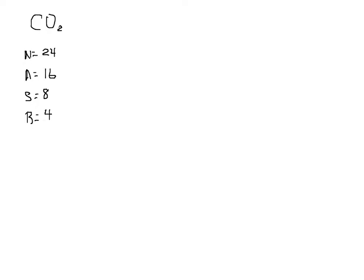Needed minus available leaves us with 8, and divided by 2 to get the number of bonds gives us 4. Carbon is in the middle; we need 4 bonds, so that means there are double bonds to each of the oxygens. Put in our lone pairs. Notice there are two bonding groups — two bonded atoms, no lone pairs — so that makes it linear for molecular geometry and linear for electronic geometry. Since the two bonded groups are the same, this is non-polar.